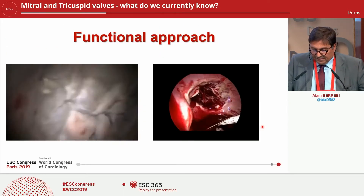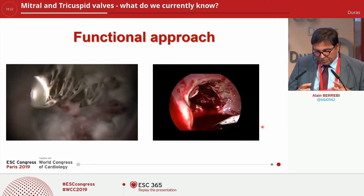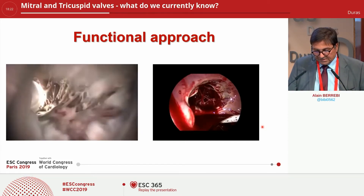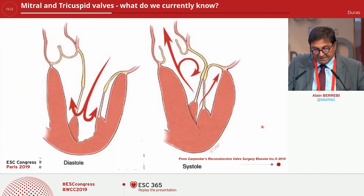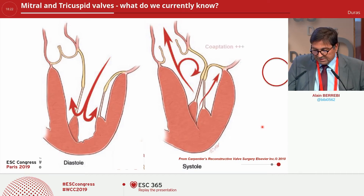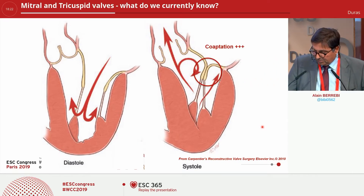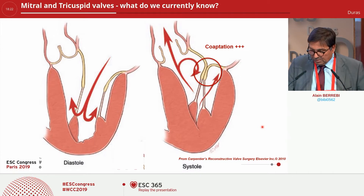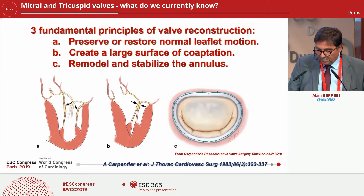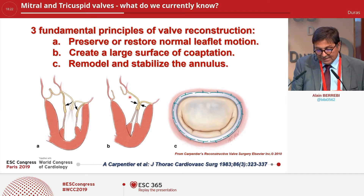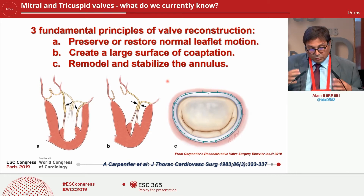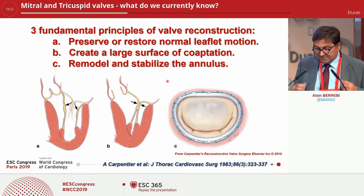This valve functions as an AV valve with closure and opening, and it is very important to consider as a functional approach, which is one of the very important messages from Carpentier. It is very important to consider the aim of closure, which is to restore a large surface of coaptation — one of the three golden rules — to preserve or restore normal leaflet motion, and to create a large surface of coaptation. And it is good news for Cardioband to remodel and stabilize the annulus.